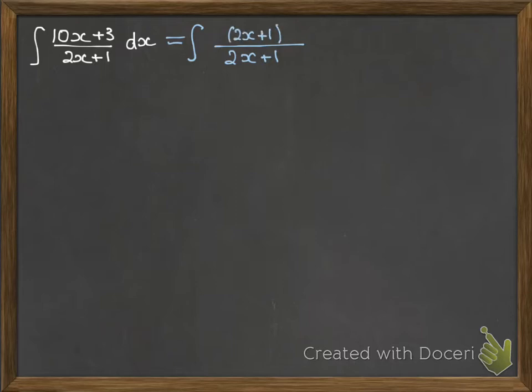So the first term there, that 10x, what would we have to multiply 2x plus 1 by to make 10x? So to get that 2x to be a 10, we'd need a 5 in front of it. Now if we multiply that bracket out, we will get 10x plus 5.